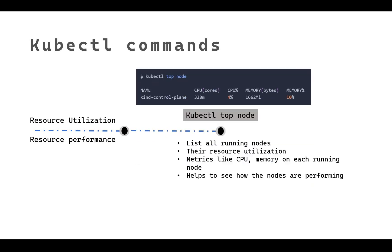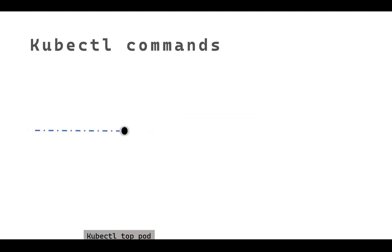When you write `kubectl top nodes`, it will show you the nodes currently running and tell you CPU usage in cores and as a percentage, memory usage and its percentage as well. This is an important command you can always use when you are seeing some performance problem.